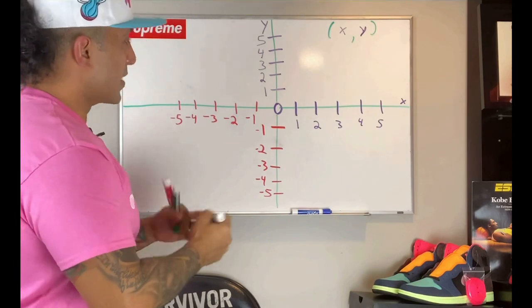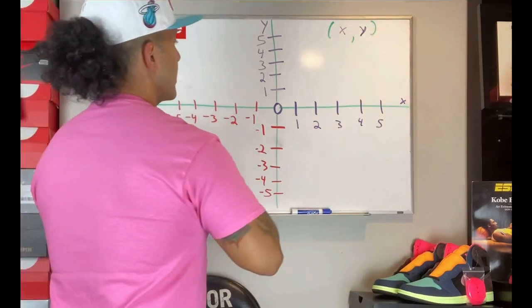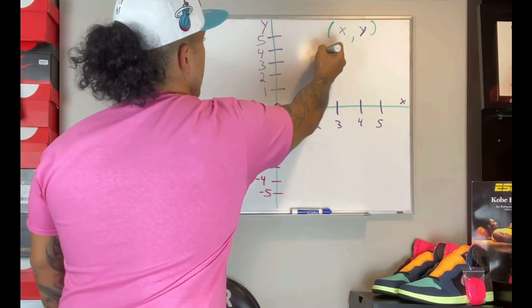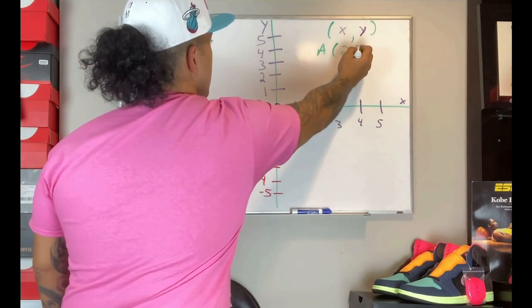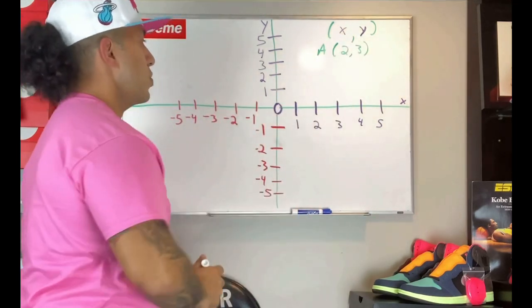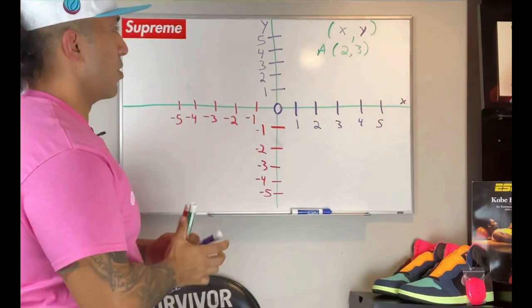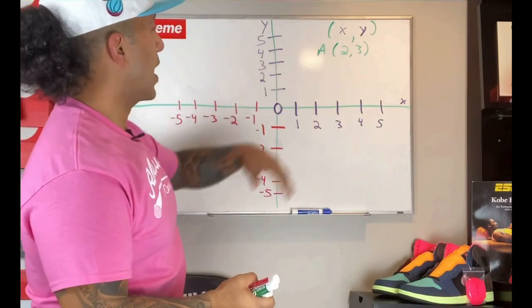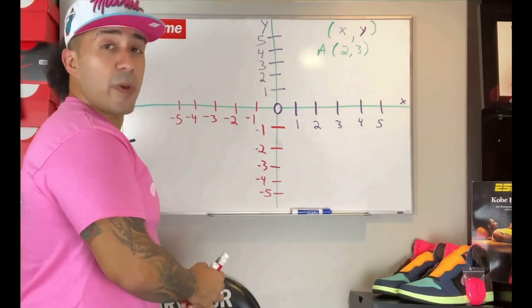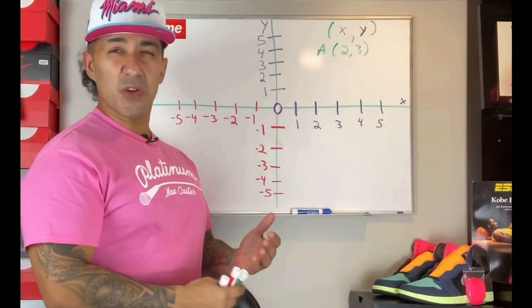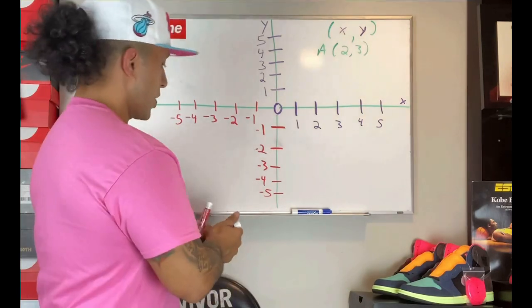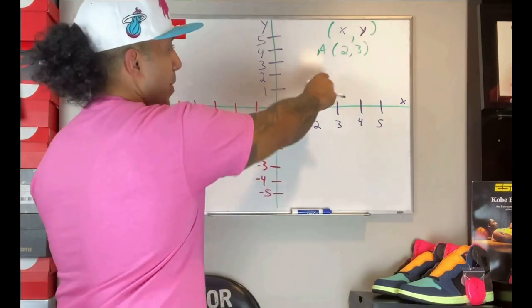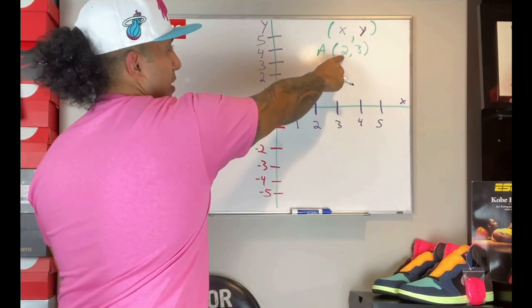our first example, we're gonna simply go with the point, let's say point A, and we're gonna plot point A on (2, 3). Okay, we're gonna plot point A on (2, 3). I'm gonna start on my origin. If you want to be specific, you can always start on your origin. So I'm gonna start on my origin. And based on that number that's given in the